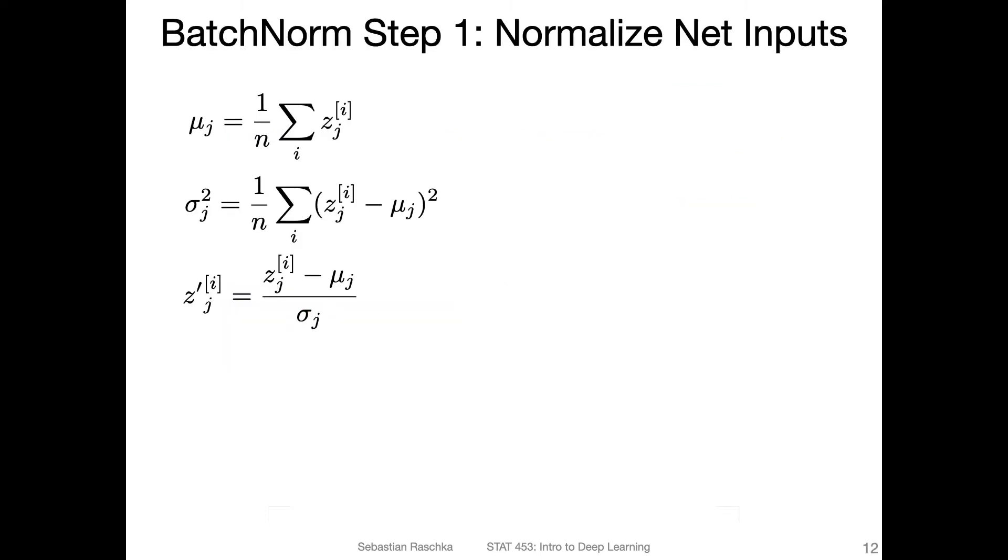So here, that's the first step of batch norm. There are two steps. The first step is to normalize the net inputs. This is essentially the same as the standardization that I explained earlier for the inputs. What's going on here is we are computing the mean over the features, where j is the feature index.